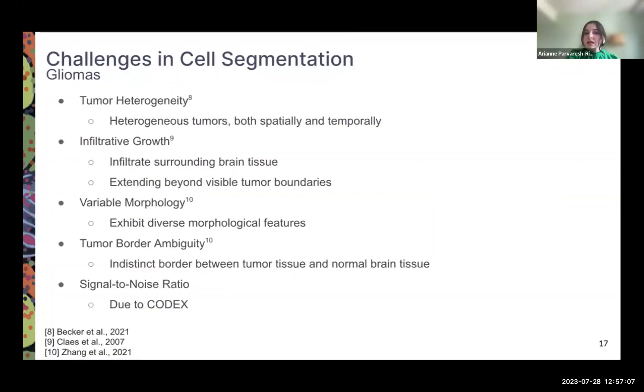What causes even more challenges is when we're trying to segment glioma cells. Some of the features and characteristics of glioma cells which cause these challenges are infiltrative growth, which causes the tumor cells to extend beyond visible tumor boundaries. The complex morphology and the microtumor environment of gliomas also lead to challenges with cell segmentation. The ambiguous tumor border, which causes an indistinct border between normal brain tissue and healthy brain tissue, also causes issues with segmentation. And the signal-to-noise ratio due to CODEX specifically could also cause issues with accurate cell segmentation.